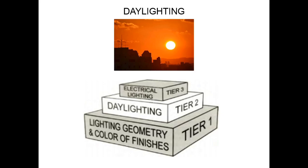As a sustainable student or architect, the approach must be a three-tier approach. The first tier is a basic tier covering lighting geometry, colors, and finishes — the lighting geometry depends on form, shape, and type of opening and fenestration. The second tier depends on daylighting — how you bring in daylight by means of the size or technical aspects of the opening. The third tier is electrical lighting. Tier one must satisfy about 70%, daylighting about 20%, and electrical lighting about 10%, making you a sustainable architect.